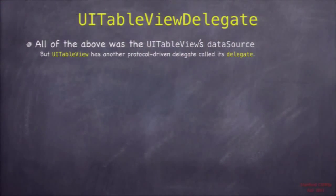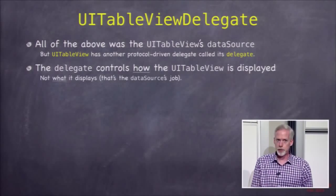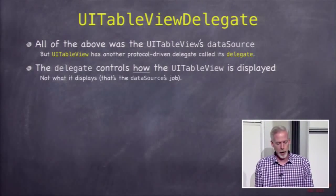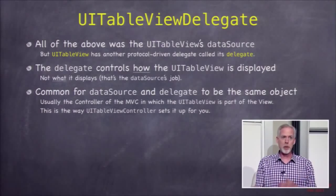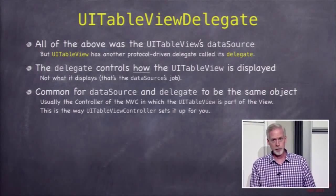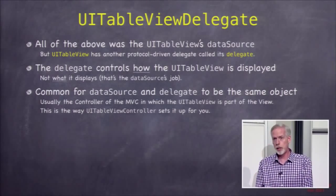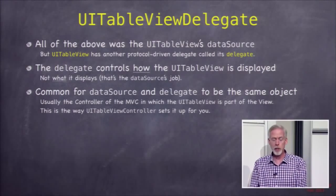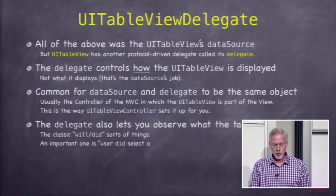The other protocol is UITableViewDelegate. This one is more about how we're going to display this table, not what data is being displayed. It's common for the data source and the delegate to be the same object — namely your controller — because the table view is part of the view, it's a UIView. Data source and delegate are usually your controller.